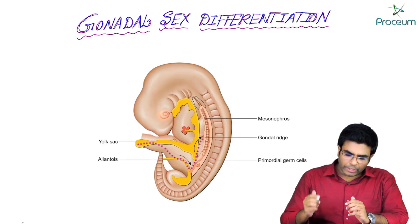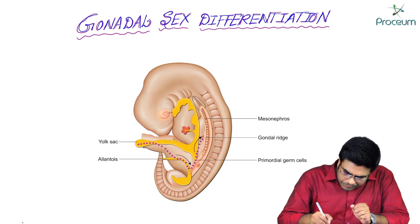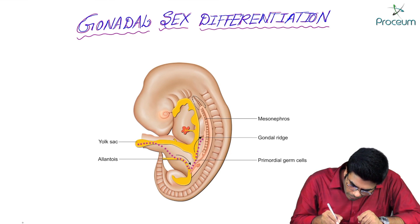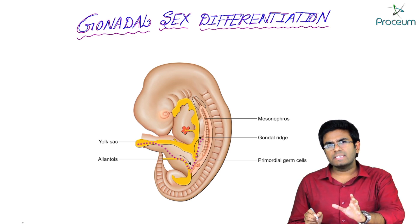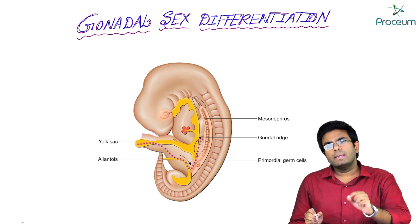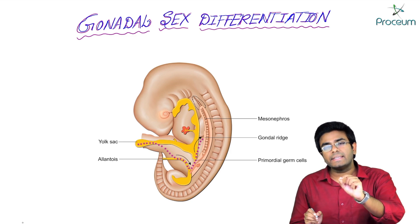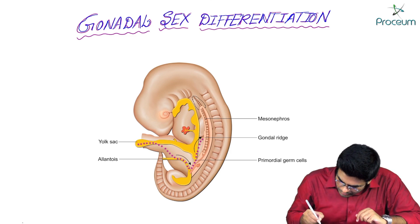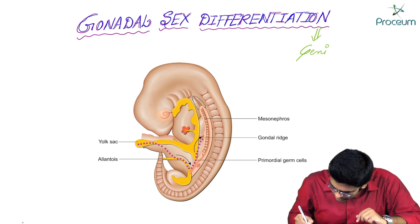In this module, let's continue with the topic of gonadal sex differentiation. Please concentrate here — in this topic we are mainly concentrating on how the gonads are formed. Gonads in the male are testes and in the female are ovaries. The important point is that gonadal sexual differentiation is genetically determined.